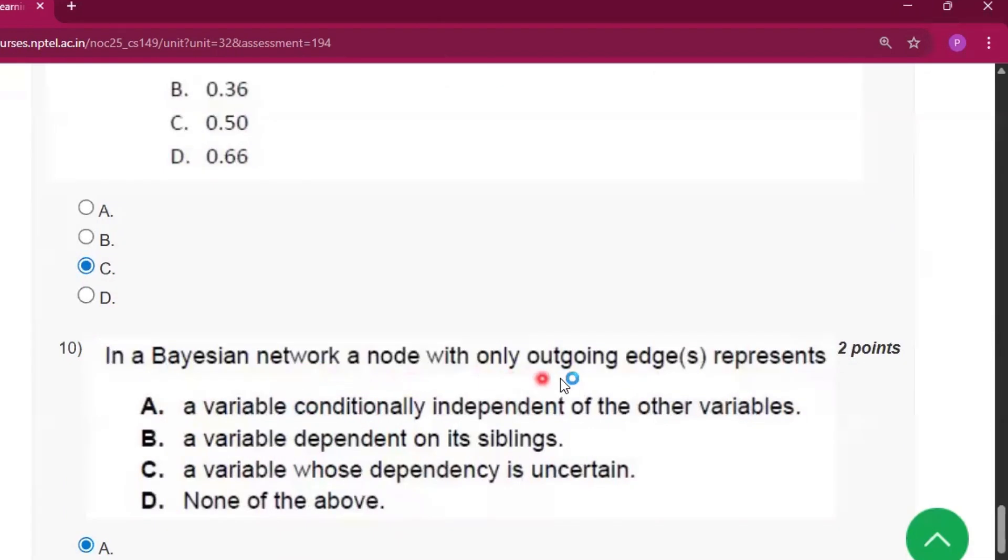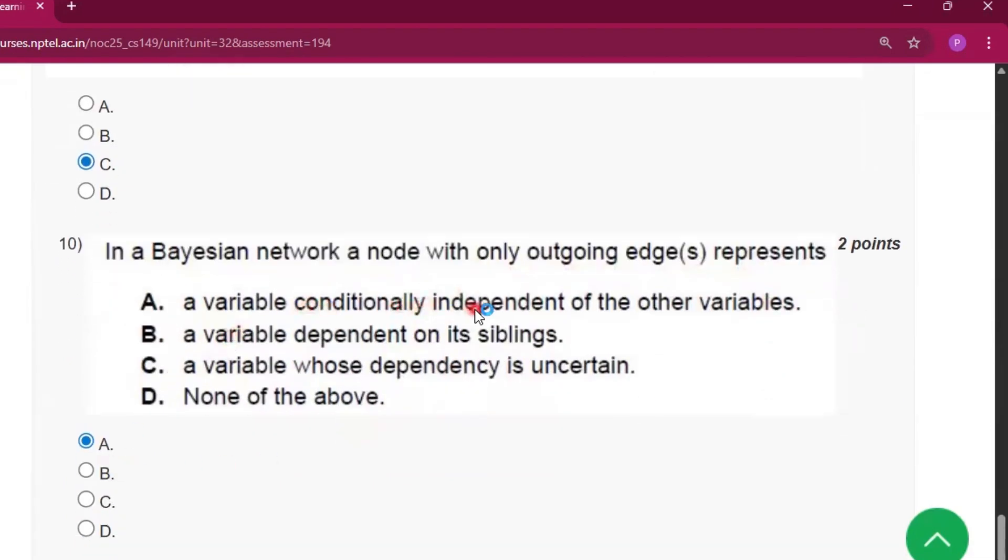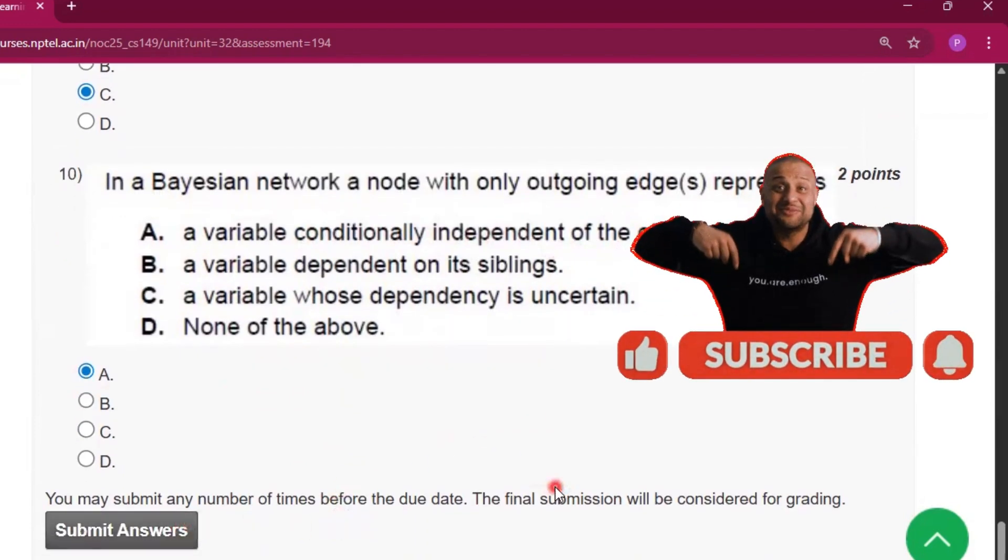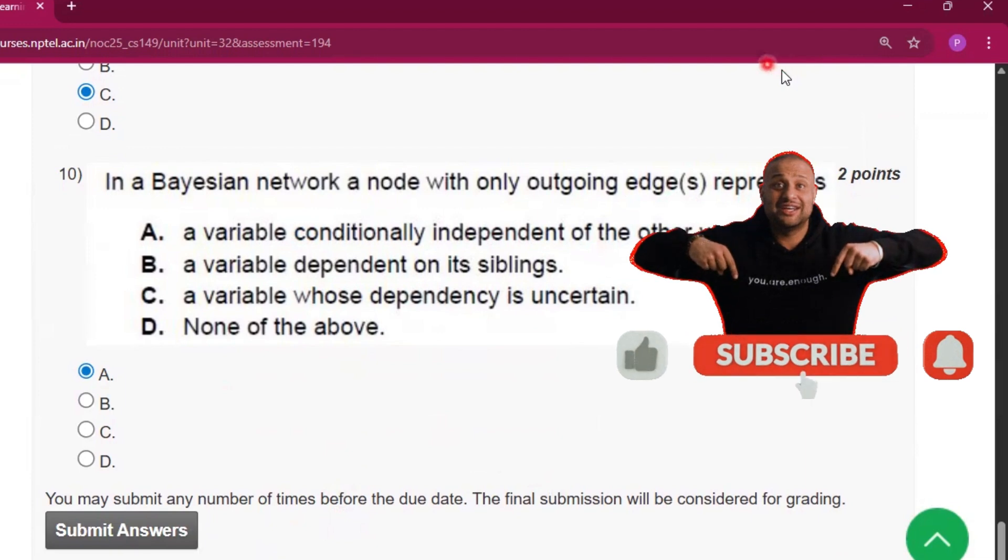Now question number 10: in a Bayesian network, a node with only outgoing edges represents option A, a variable conditionally independent of other variables. Please subscribe to my channel if you get some help from this video. Thank you for watching. See you in the next video.